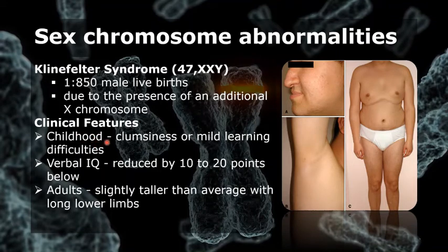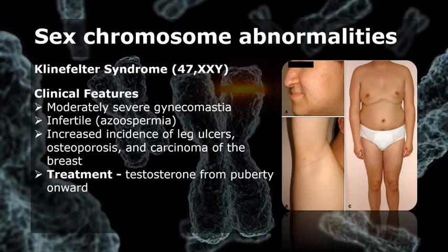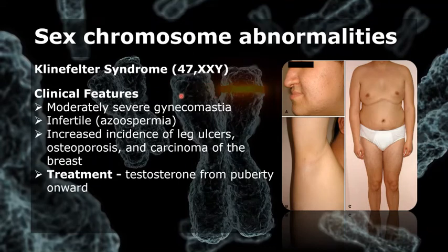The overall verbal IQ is reduced by 10 to 20 points below average, especially on verbal skills. Adults tend to be slightly taller than average with long lower limbs. Other features include moderately severe gynecomastia, which is breast enlargement.